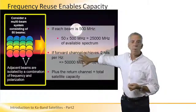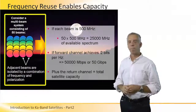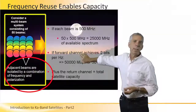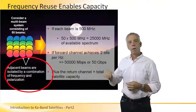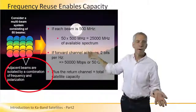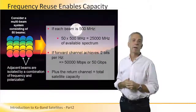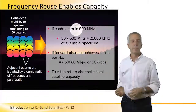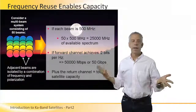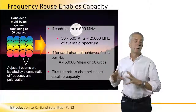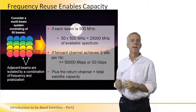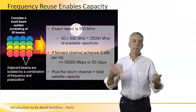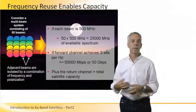Consider a multi-beam system of 50 beams. Using a combination of frequency separation and polarization separation, adjacent beams don't interfere with each other. If each beam in a 50-beam system is 500 MHz wide, that's 25,000 MHz — 25 GHz — of available frequency capacity. At 2 bits per hertz, which is reasonable given the small beams and high power concentration, that translates to about 50 Gbps for this sample 50-beam satellite.